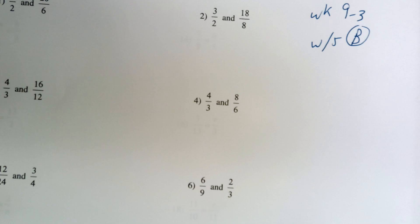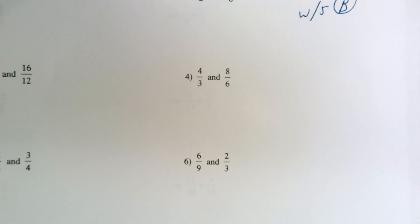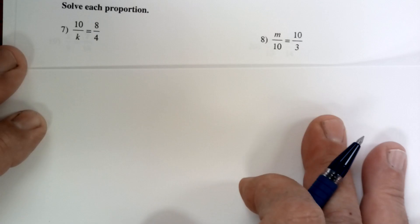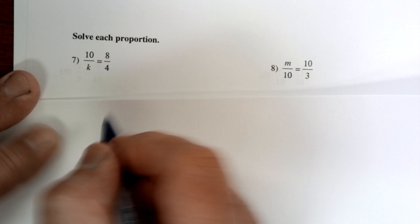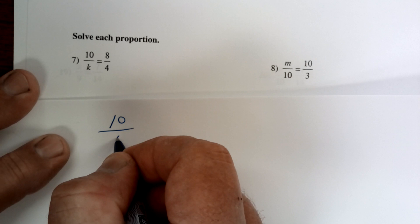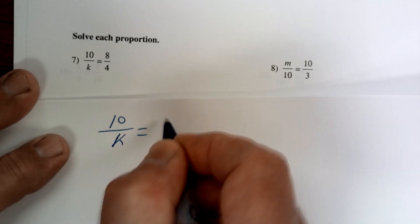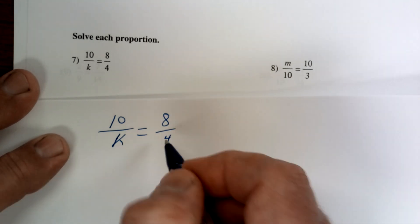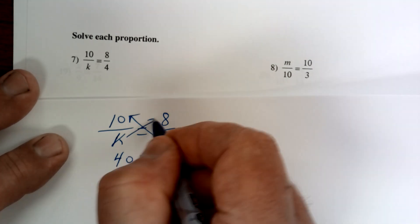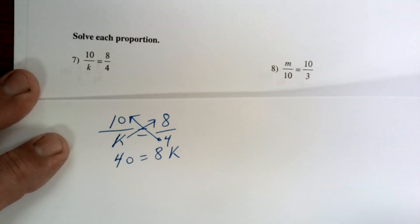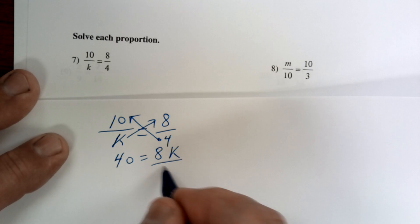Let's copy down number seven and work it. To solve this one, you're going to cross multiply. So it's 10 over k equals 8 over 4. Go from the bottom to the top, so that gives you 40 equals 8k.